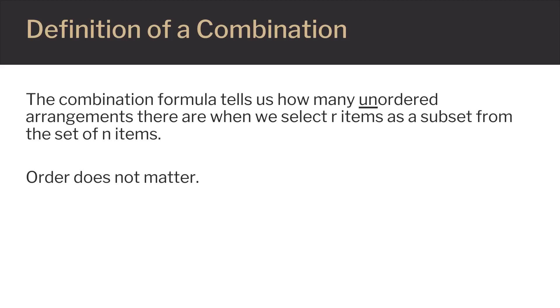The combination formula tells us how many unordered arrangements we can make if we pick a certain number of items from a larger group of items. The important part to remember is that order does not matter.